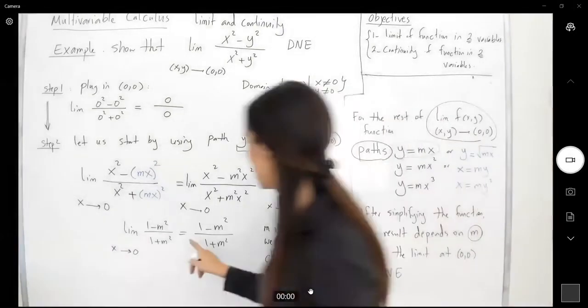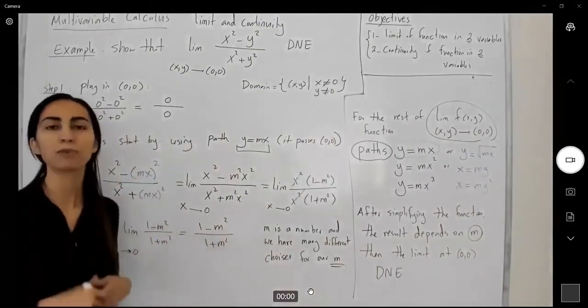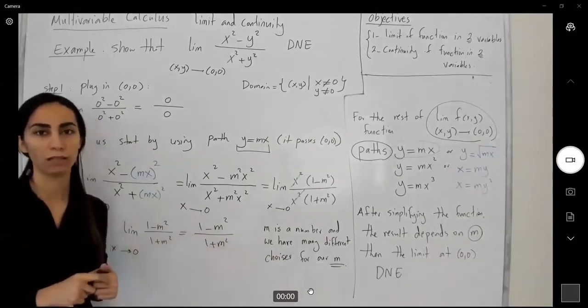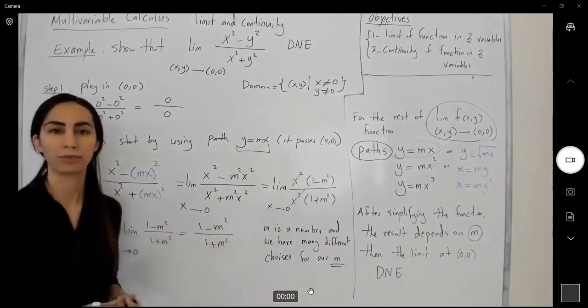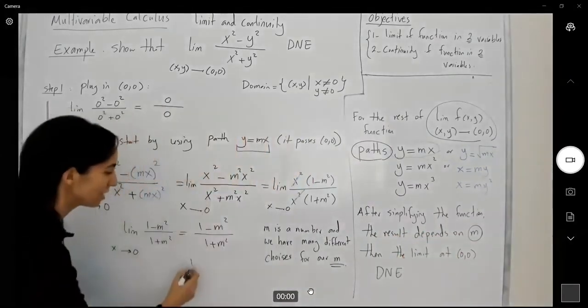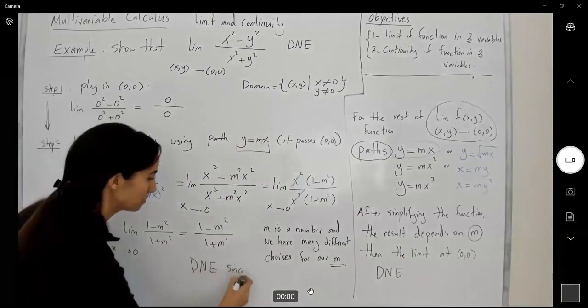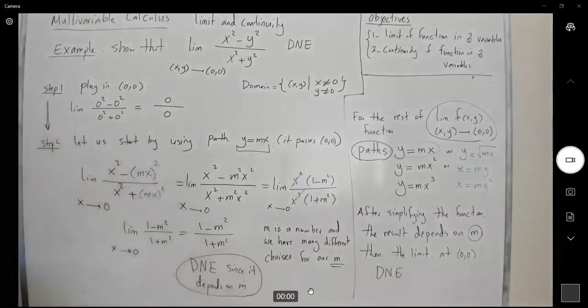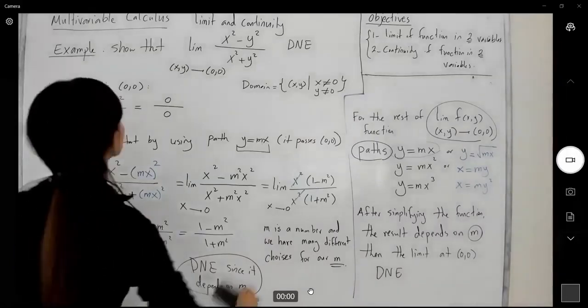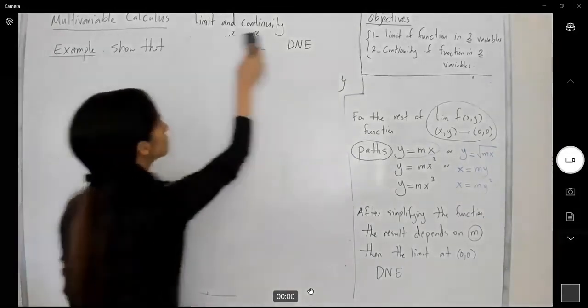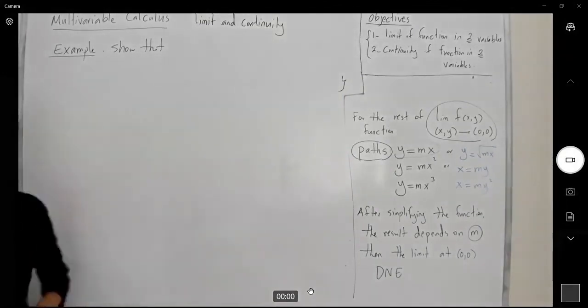It means that if I plug in m to be 1, the limit is equal to 0. If I plug, for example, 2 for m, I get 1 minus 4, negative 3, divided by 5. I get a different value for L. So you can choose any other number for your m and get a different value. So we don't get a unique number. It means that the limit depends on m and it doesn't exist. Another example for you.